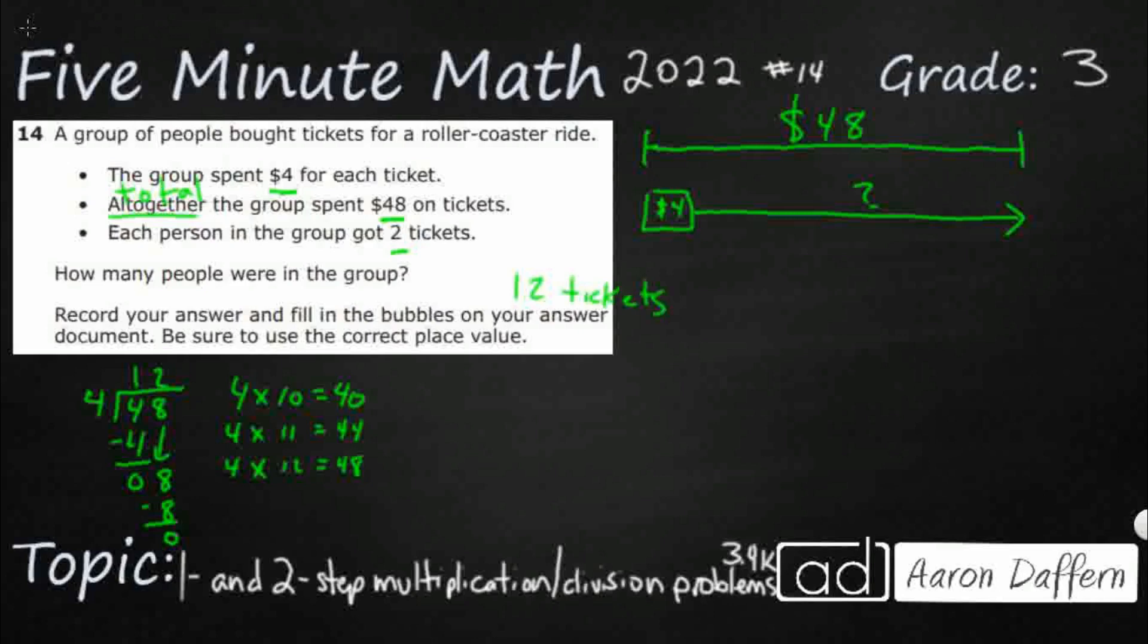Well, there's 12 tickets. Now it says each person in the group got two tickets. So each person. So we're going to make a new strip diagram. There's a new total. So there are 12 tickets. And then each person got two tickets.